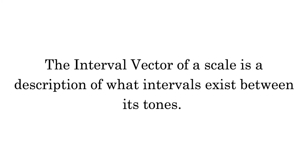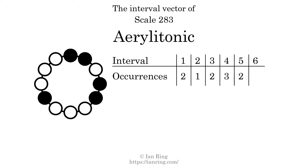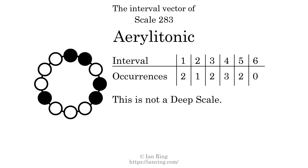The interval vector of a scale is a description of what intervals exist between its tones. There are two intervals with the size of one semitone, here and here. There is one interval with the size of two semitones, here. There are two intervals with the size of three semitones, here and here. There are three intervals with the size of four semitones, here, here and here. There are two intervals with the size of five semitones, here and here. There are no intervals with the size of six semitones. Each interval does not appear in this scale a unique number of times, so this is not a deep scale.